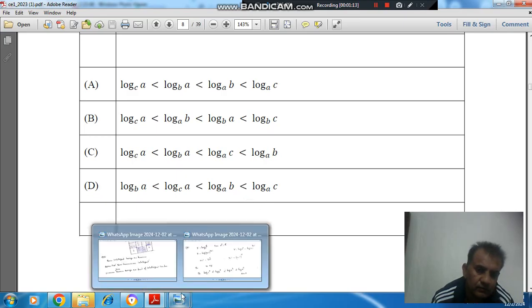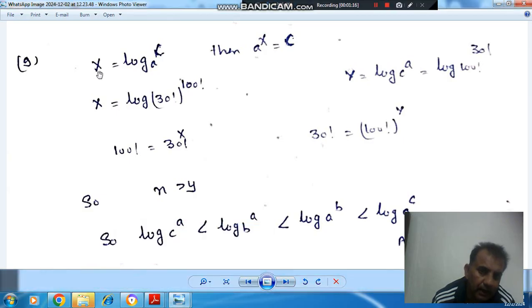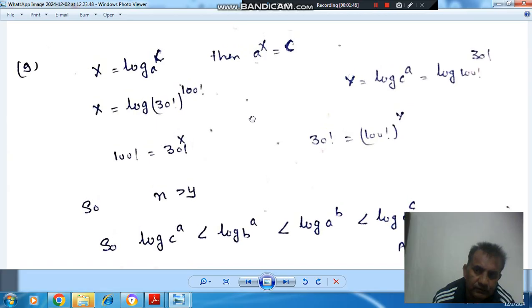So here we know that x is log base A of C. So if we take A as given as 30 factorial and C given as 100 factorial, then if we put A and C, then 100 factorial will be equal to 30 factorial to the power x.